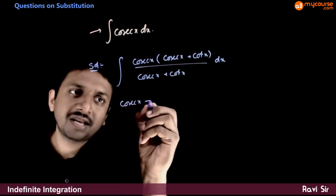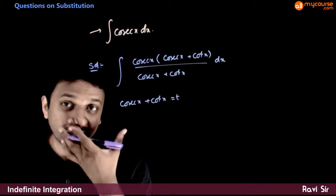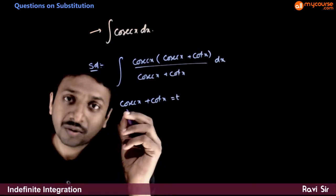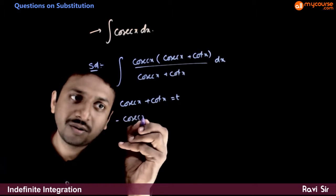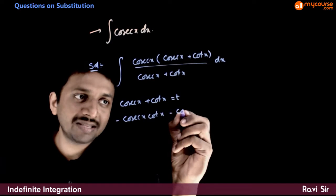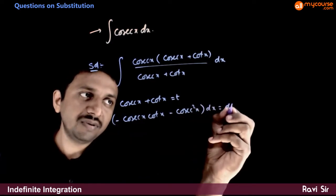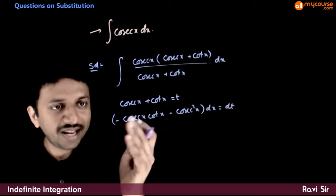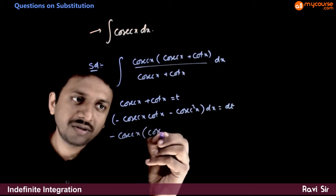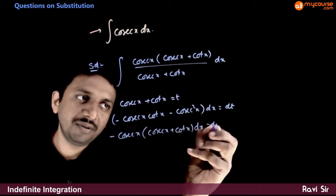Let cosecant x plus cot x equal t. If I differentiate this, the derivative of cosecant x is minus cosecant x cot x, and the derivative of cot x is minus cosecant squared x dx, which equals dt. Taking minus cosecant x as common, we get: cosecant x plus cot x dx equals dt.